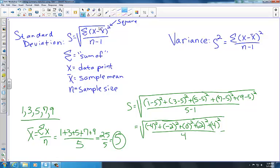So now let's square those values. Negative 4 squared gives me positive 16. Negative 2 squared gives me positive 4. Zero squared is 0, of course. Positive 2 squared gives me 4. And positive 4 squared gives me 16. All divided by 4.